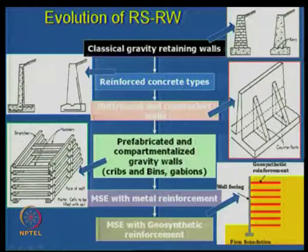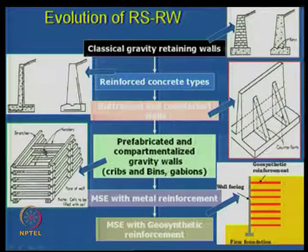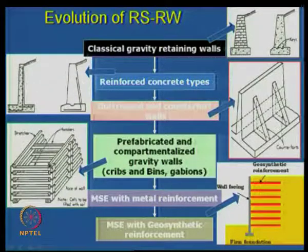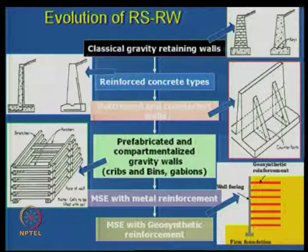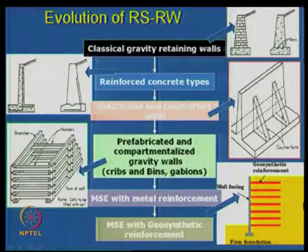Another type of retaining wall is to compartmentalize the system in the form of a bin — you place all the materials inside and it acts as a confined material. Though there is pressure from all sides, this confinement takes care of the pressures developed. This has been used effectively in some flyovers in Bangalore and is very cost effective. The final type we discuss today is the reinforced earth wall, in which you have a facing element, a geosynthetic reinforcement, and a backfill.